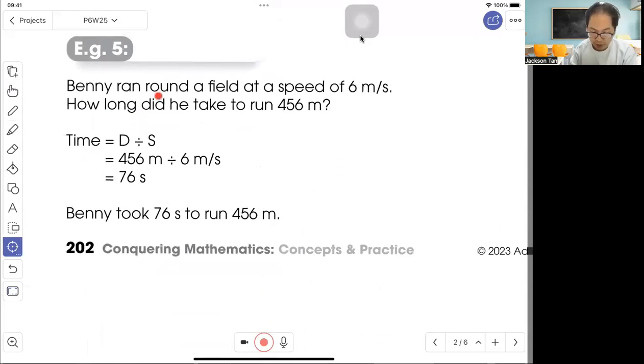Example five: Benny ran around at a speed of 6 meters per second. How long did it take to run 456 meters? So how long is talking about the time. To find time, use distance divided by speed. So 456 meters divided by 6 meters per second equals 76 seconds. Benny took 76 seconds to run 456 meters.